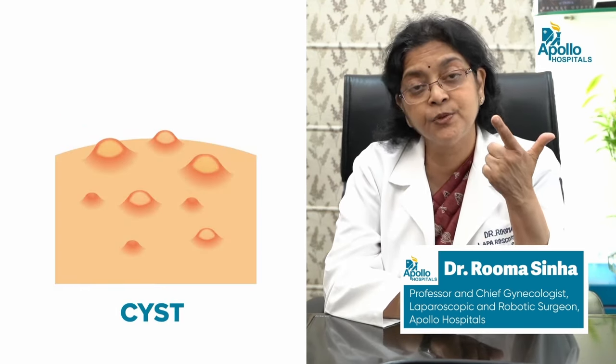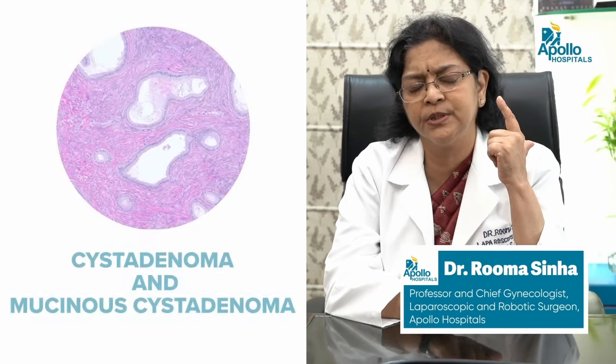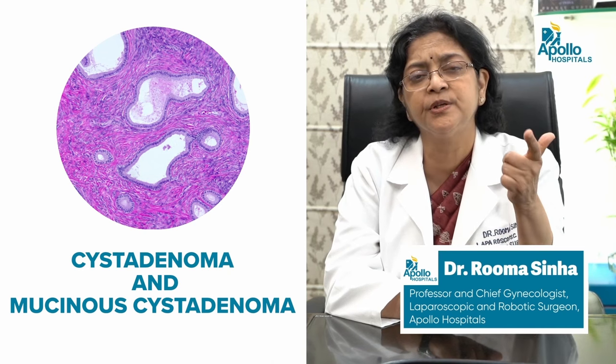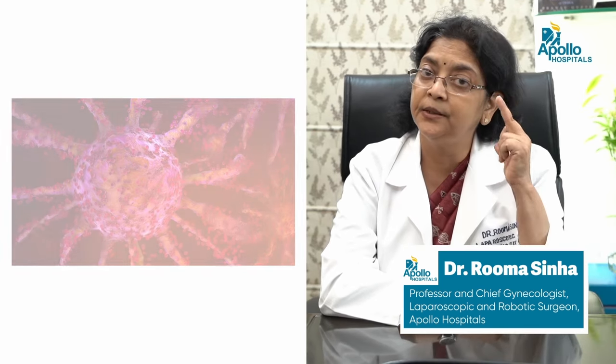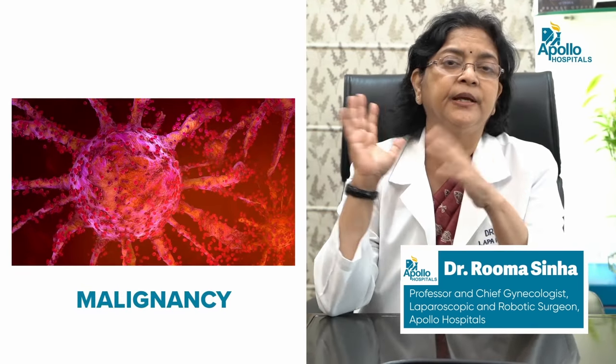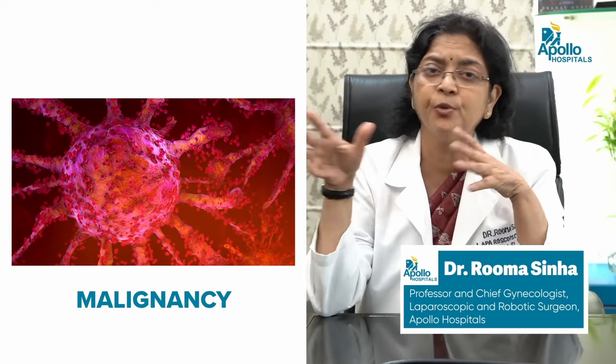The second type is cysts which are tumorous but not cancerous. These include cysts like serous cyst adenoma, mucinous cyst adenoma, and many different kinds of cysts. One cyst in this category which is not cancerous but a different pathology altogether is endometriosis — those cysts are caused by blood collection inside them.